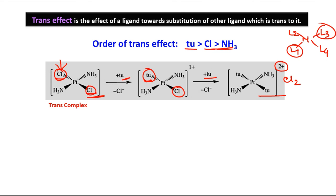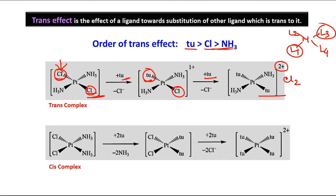This is the white complex — white precipitate — we saw previously. For the cis complex, chlorine again has more trans effect, so the ligand opposite to each chlorine — the two ammonia groups — are replaced by two thiourea in the first step. In the second step, now with chlorine and thiourea present, thiourea has more trans effect, so these two remaining chlorine are also replaced by two more thiourea molecules. Finally, we get Pt with four thiourea with 2+ charge balanced by Cl2 — the yellow color solution, and on cooling we can get the crystals.